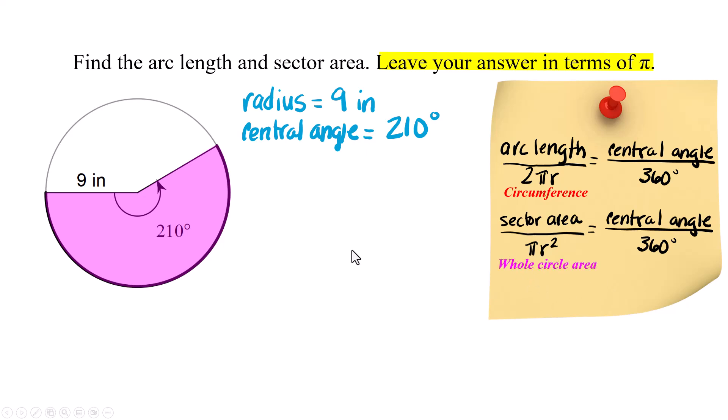The whole circle area πr². Let's do the setup. Sector over π times 9 squared equals 210 over 36. I'm going to reduce this to 210 over 360 because it just bugs me. I already know I'm going to reduce so I might as well do it now.